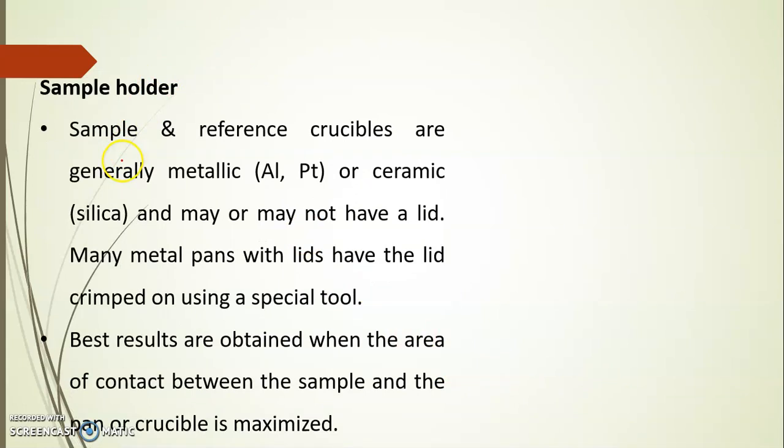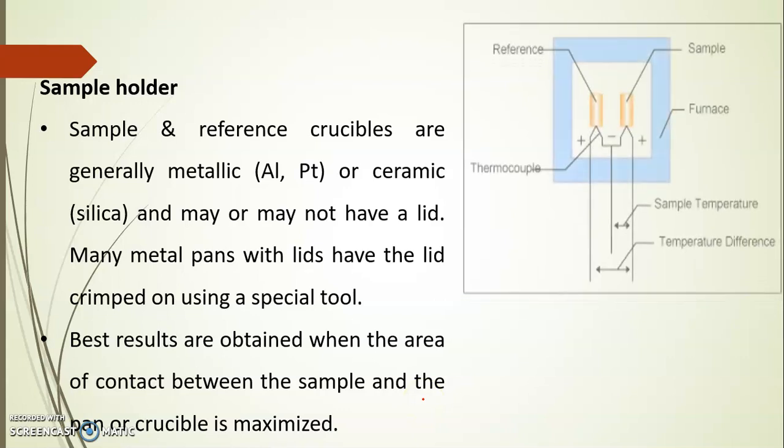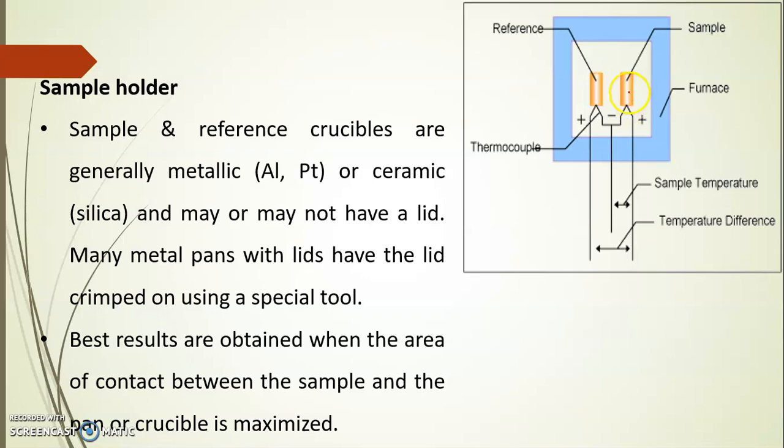Now, let us see one by one compartment of the instrument. First one is sample holder. Sample and reference crucibles are generally metallic such as aluminum, platinum or ceramic. It may or may not have a lid. Many metal pans with a lid have the lid crimped on using a special tool. Best results are obtained when the area of contact between the sample and the pan or crucible is maximum. Here you can see sample and reference containers are present inside the furnace and between the furnace and sample holder, there is purge gas present. This is the sample temperature and temperature difference which will be recorded. These containers are connected with the thermocouple and it gives the signal.